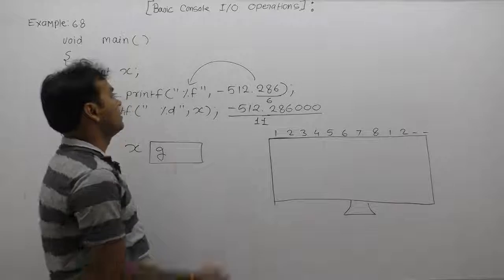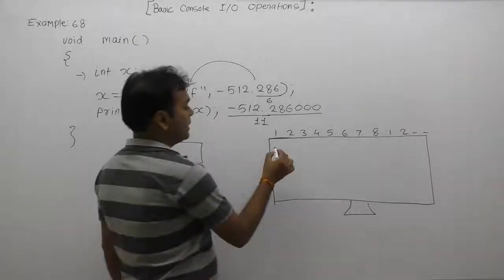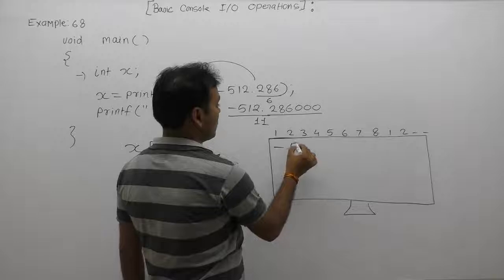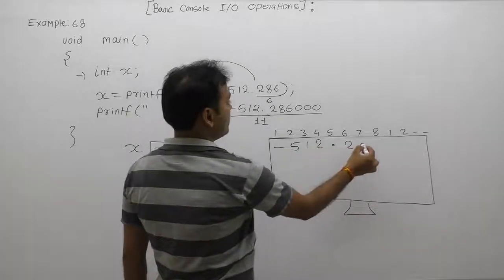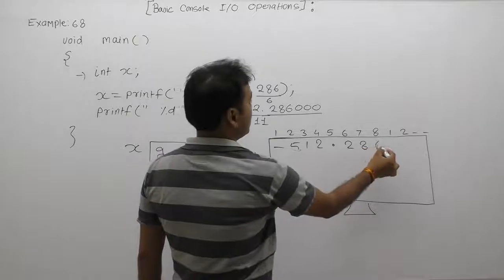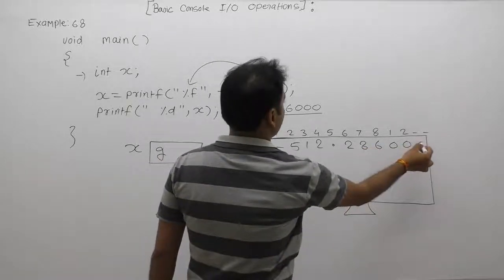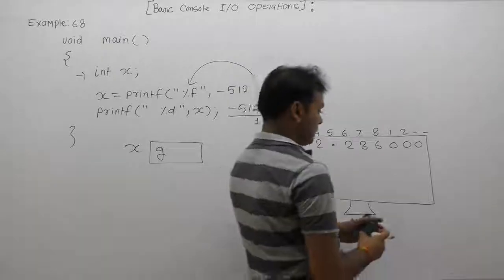According to this printf function, it will print minus 512.286000, three times zero. We are extending, then the cursor will be available on the next place after zero.